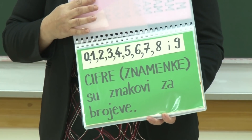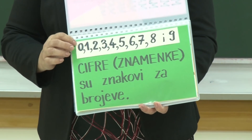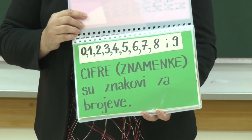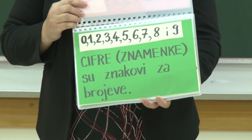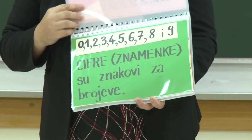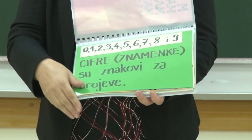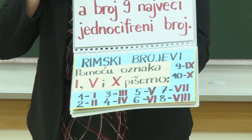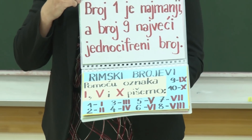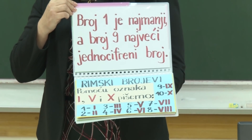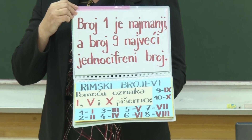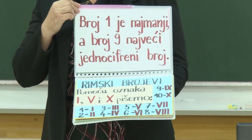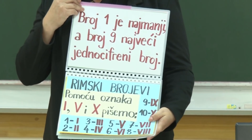Kako god hoćete, možete reći. To su 0, 1, 2, 3, 4, 5, 6, 7, 8 i 9. S ovim ciframa, znamenkama, zapisujemo sve brojeve na svijetu. Kad bi vas sad pitala koji je broj jednocifreni najmanji, a koji je najveći, rekli biste: broj jedan je najmanji, a broj 9 je najveći jednocifreni broj.